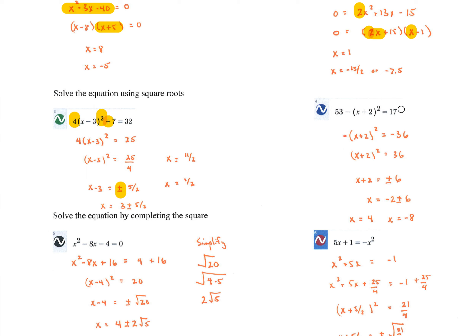For the second square root problem, subtract 53, then divide by negative 1 to get rid of the negative, then take the square root. The square root of 36 is plus or minus 6. Then subtract 2, so we get negative 2 plus or minus 6. Negative 2 plus 6 and negative 2 minus 6 give our two answers.